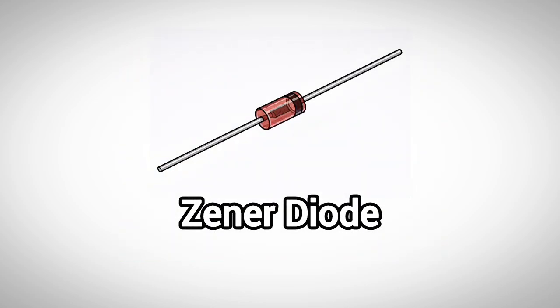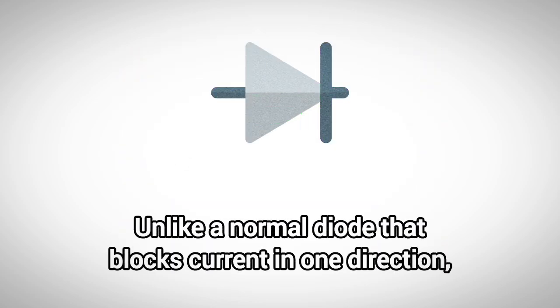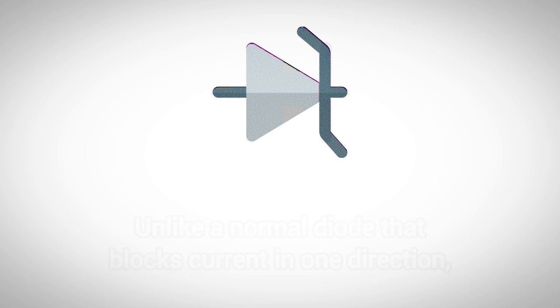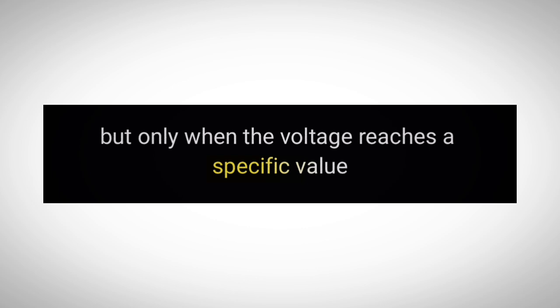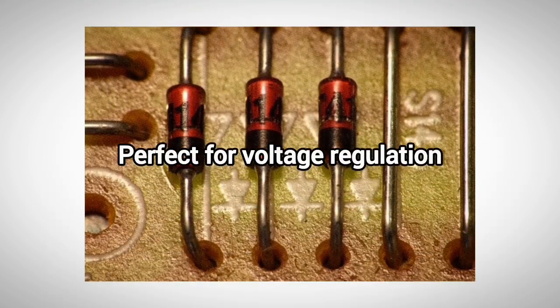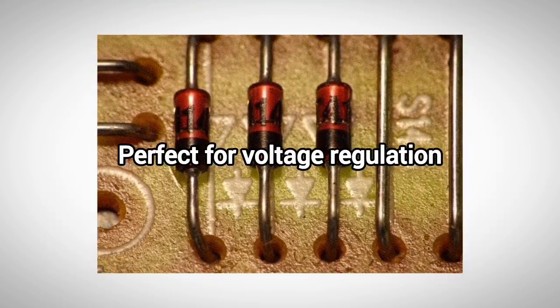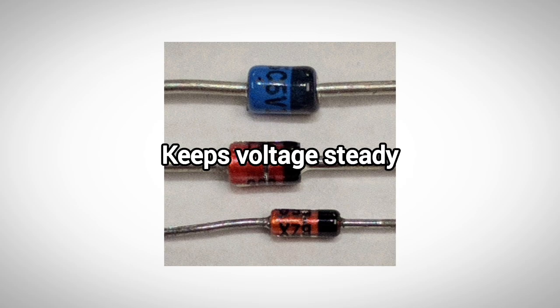Another important diode is the Zener diode. Unlike a normal diode that blocks current in one direction, a Zener diode is specially designed to allow current to flow backward, but only when the voltage reaches a specific value. This makes it perfect for voltage regulation, meaning it helps keep the voltage steady in a circuit.